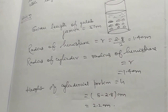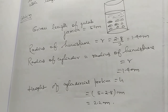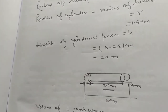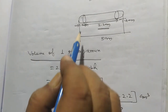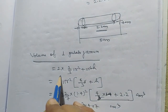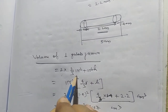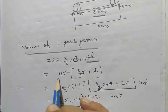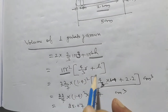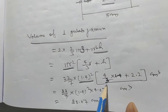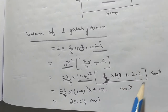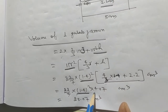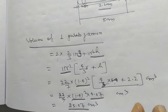The whole length is five centimeters and the length of the cylindrical portion is two point two centimeters. Volume of one gulab jamun equals volume of two hemispherical portions plus volume of cylinder: two into two by three pi R cube plus pi R square h. Taking common pi R square: four by three R plus h. That is twenty-two by seven, one point four squared, into four by three into one point four plus two point two, which gives twenty-five point zero seven centimeter cube.